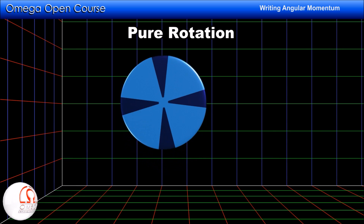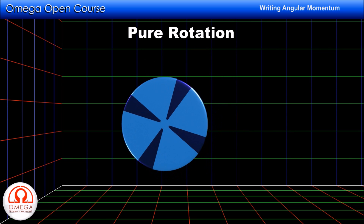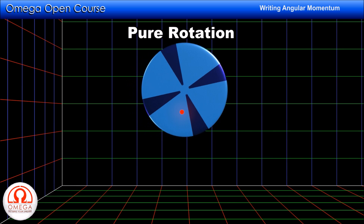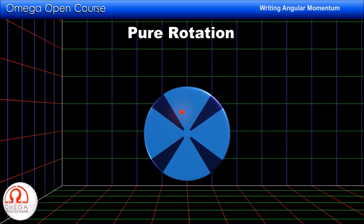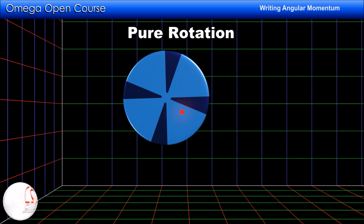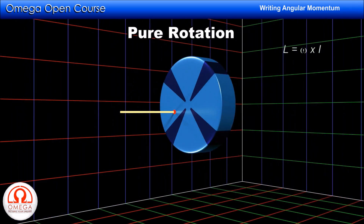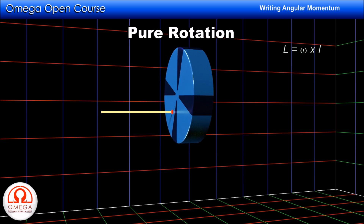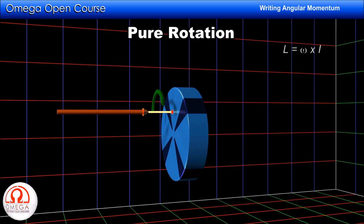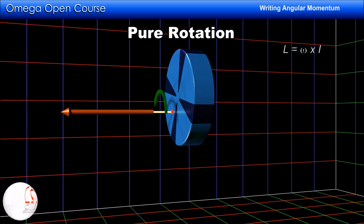Now let us move on to the case of pure rotation. If a rigid body moves in such a manner that there exists a point on the body which is at rest in our frame, then the body is said to be in pure rotation about that point. For example, when this disc is moving, the red dot on the disc is not moving, so the disc is in pure rotation about this red dot. The magnitude of angular momentum is simply the product of the angular speed of the disc and the moment of inertia of the disc about the axis perpendicular to the disc and passing through the red dot. The direction is the direction in which the disc is rotating — in this case clockwise. If rotation is clockwise, the actual direction of angular momentum is into the plane; if anticlockwise, it is out of the plane.